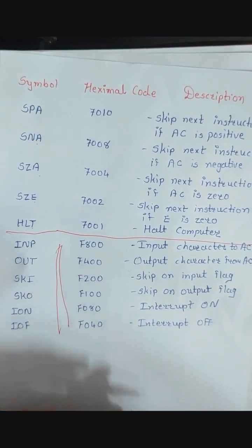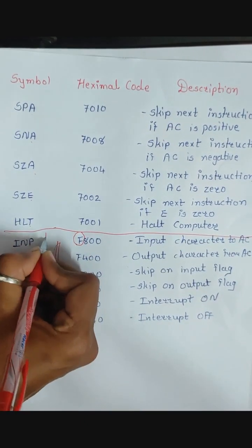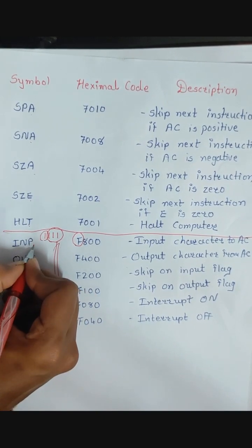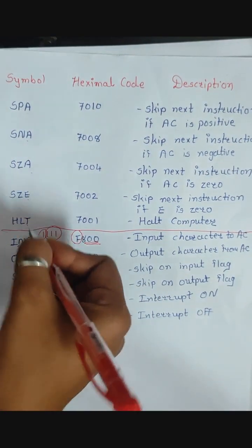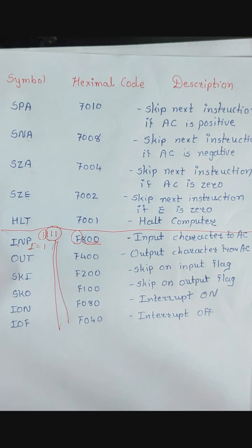The input-output instructions start with hex digit F, meaning bits 12 to 15 are all 1 (1111). The input-output instructions are: INP (input character to AC), OUT (output character from AC), SKI (skip on input flag), SKO (skip on output flag), ION (interrupt on), and IOF (interrupt off). The meaning of input flag and output flag will be discussed in the next video. Here we are just covering what instructions are available in the basic computer.